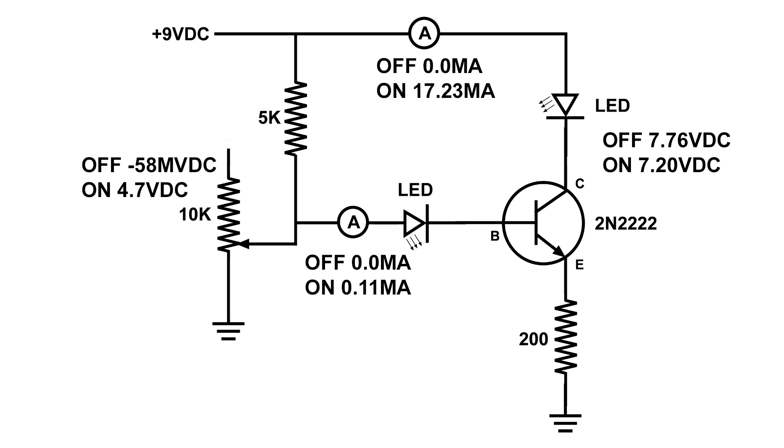But when it's on, it's only 0.11 milliamps—not very much. But take a look at what's in the collector circuit. When it's off, it's 0 milliamps, but when it's on, it's 17.23 milliamps. That's quite a bit more milliamps. So I decided I wonder how many times 0.11 goes into 17.23, because that's the increase.